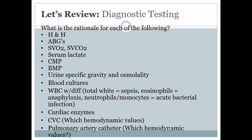CMP — comprehensive metabolic panel — includes liver function tests not found in the basic metabolic panel, showing decreased organ perfusion and organ failure more intensely. The basic metabolic panel also shows decreased organ perfusion and electrolyte status. Urine specific gravity evaluates fluid volume and concentration. Blood cultures identify infection or the type of bacteria present. WBC with differential: total white count is for sepsis, eosinophils for anaphylaxis, neutrophils and monocytes for acute bacterial infection.